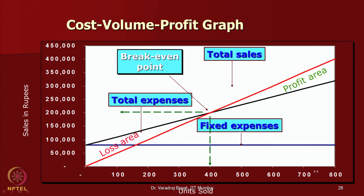Once you cross break-even, every extra contribution you earn is all profit because fixed costs are already covered. As units increase, the profit area keeps growing, but the loss area is limited. Maximum loss equals fixed cost at zero units, because fixed costs are incurred irrespective of sales. At zero, you have incurred all fixed costs with zero revenue, so fixed cost is the maximum loss. From there, loss decreases, reaches zero at break-even, and above that you have profit. That is why BEP is a very important calculation for most companies.